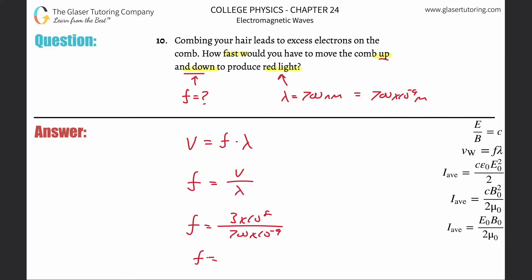need to do is to take out the calculator and calculate. So 3 times 10 to the 8 divided by 700 times 10 to the minus ninth.